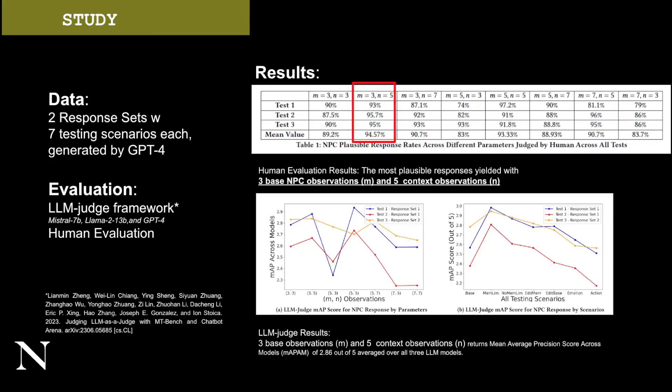To answer the question, we conducted a study and evaluated the results using an LLM judge framework and human evaluation. These show that for the most plausible responses of our NPC, we need to pass three base NPC observations and five context observations to our system.